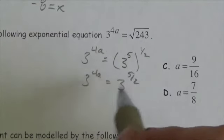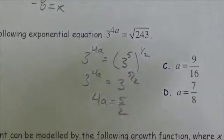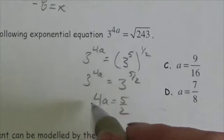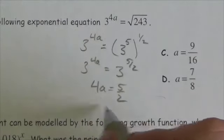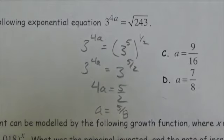Once I've got power equal to power, where the bases are the same, I know that the exponents must also be the same. And if the exponents here are this, if now 4a is equal to 5 halves, I can divide both sides by 4, and that'll get me 5 eighths.